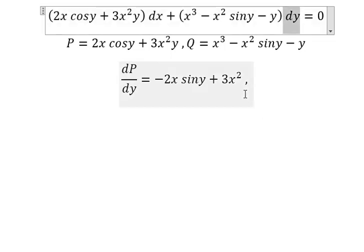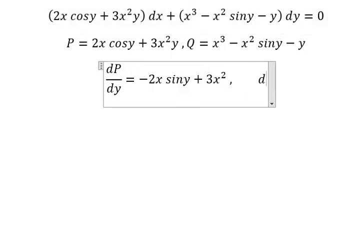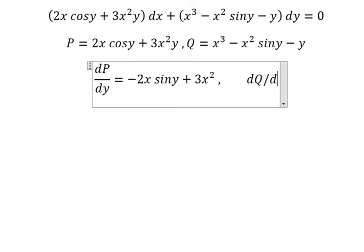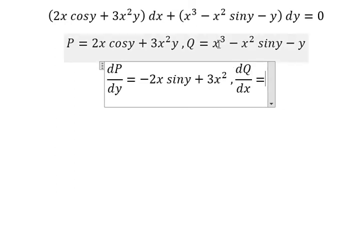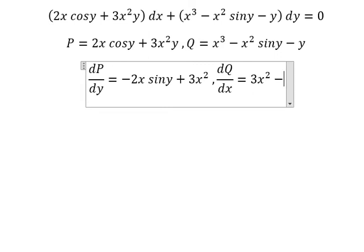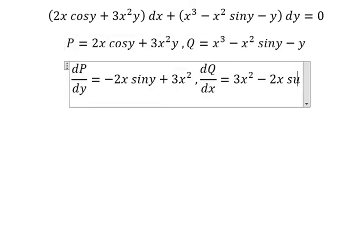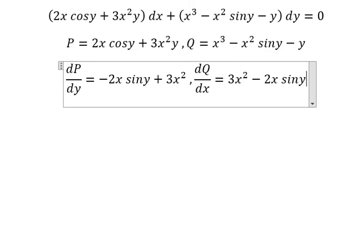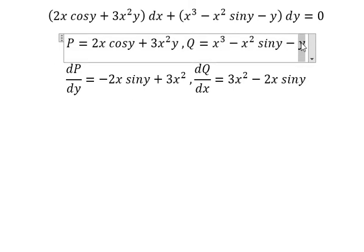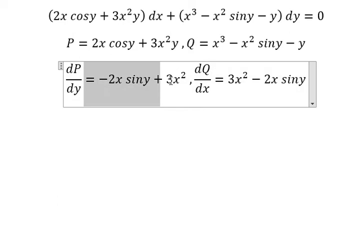We have dy, that means we need to do the first derivative of Q with respect to x. This one we have 3x², this one we have negative 2x sin y, and this one we don't have x so we get 0. We see that this one equals to this one, so they are exact.